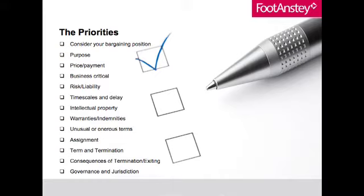Timescales and delay — it's all very well knowing what you're going to do and when you're going to do it by, but what happens if there's a delay? What happens if you can't get your shipment in and therefore can't do what you promised to do to someone upstream in the contract chain? It's really important to have thought through all the delay problems that can occur in your business and what the remedies will be.